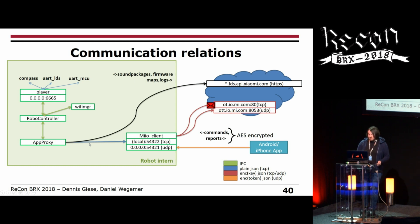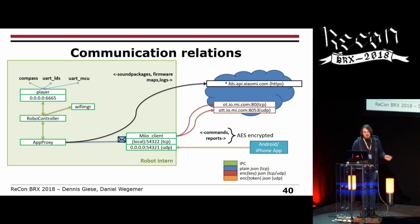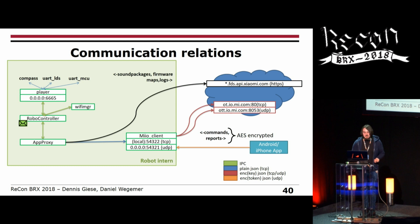Here's how it works: when the cloud sends a command to the MIIO client, it decrypts the command and forwards it to the internal app proxy component. The app proxy then forwards the command over IPC to the other components, which respond, and the whole thing goes back to the cloud.